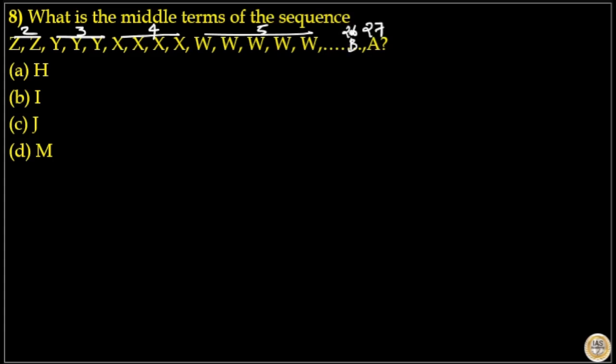That means B repeats 26 times and C repeats 25 times. So to find out the middle term, take the sum of 2 to 27.